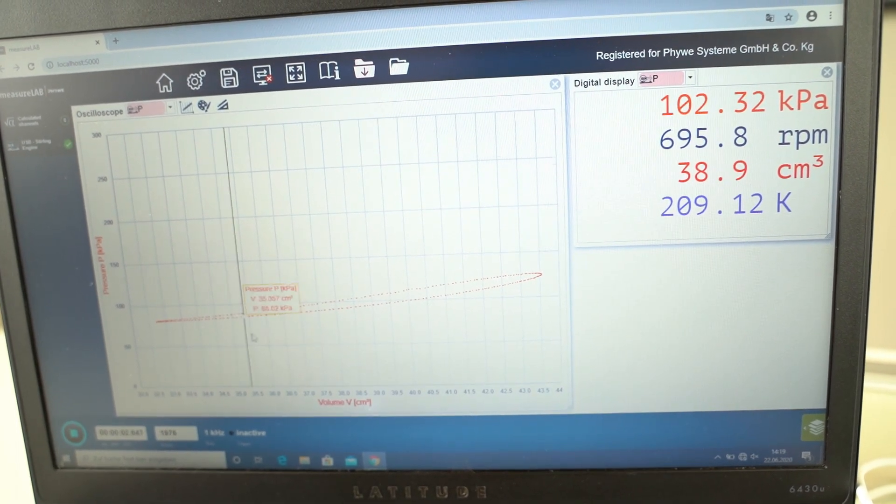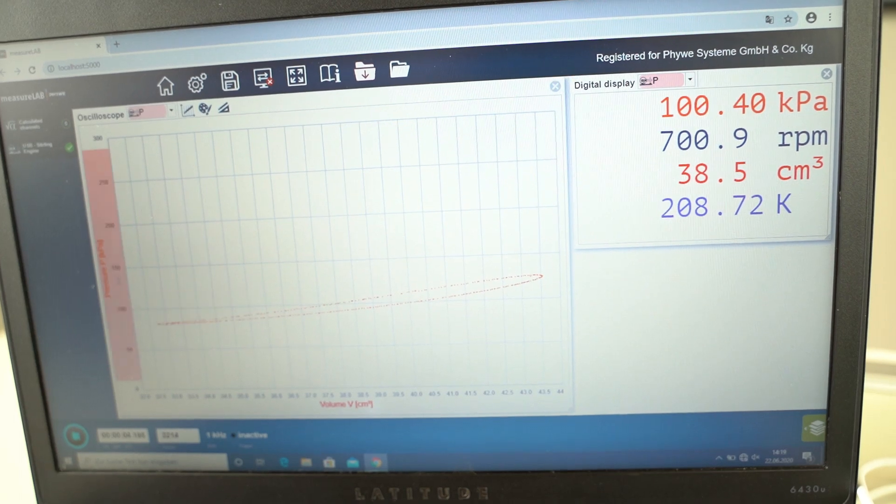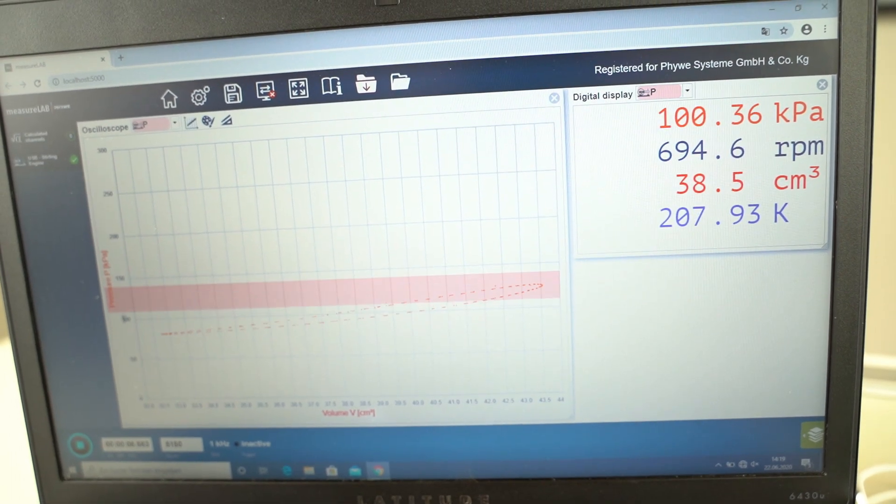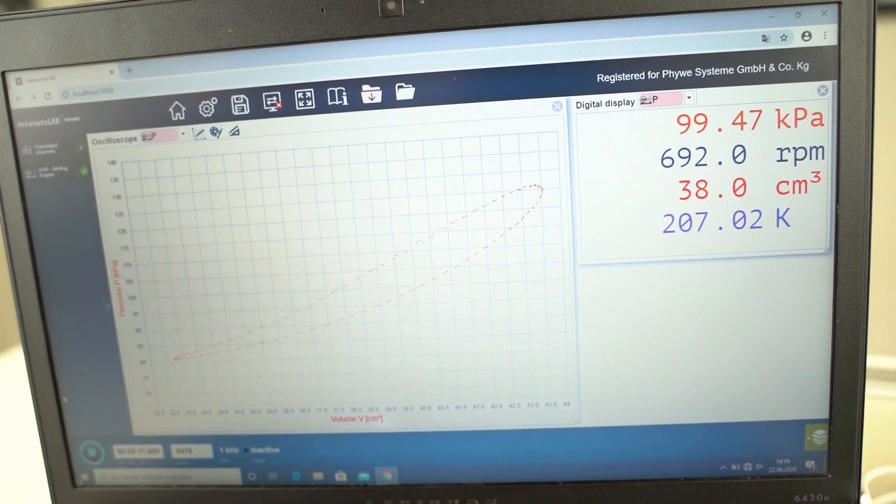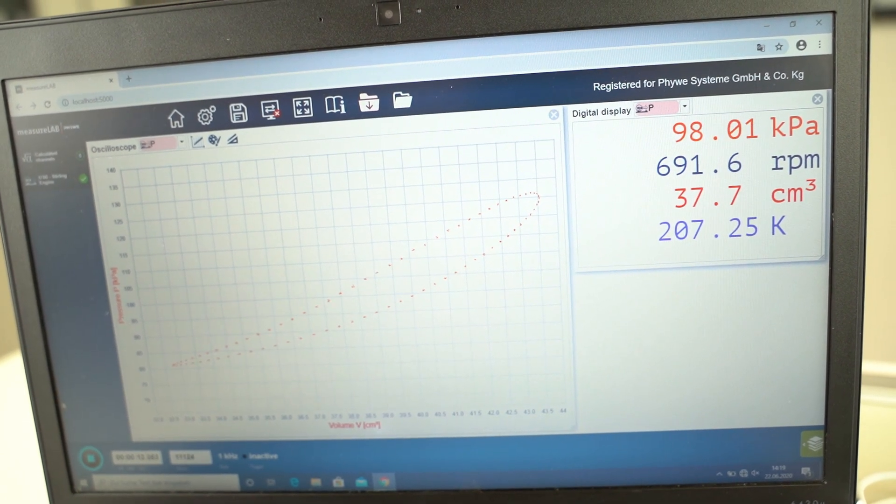The PV curve will automatically appear and we can for example zoom into the graph and see the module's resulting data.